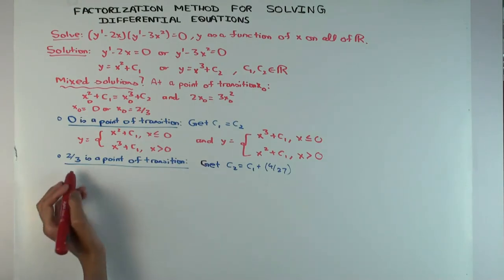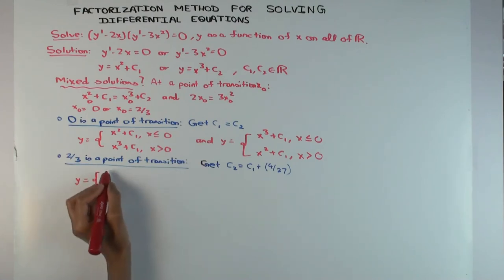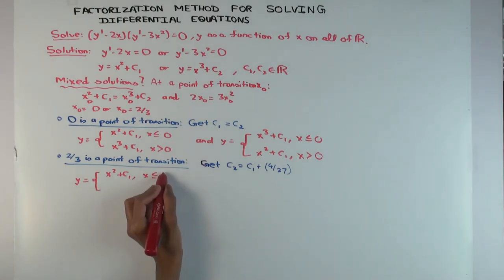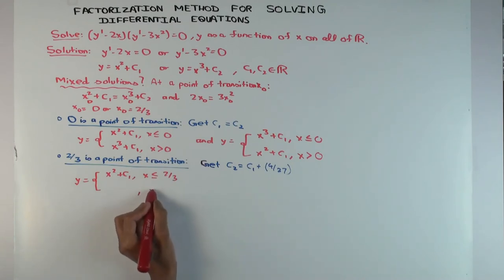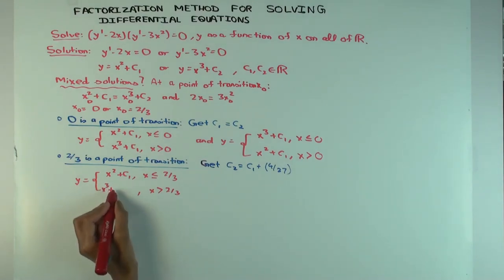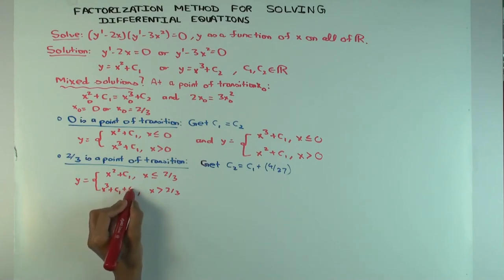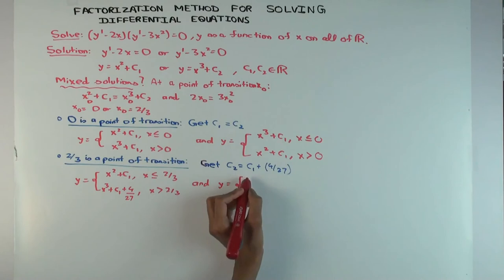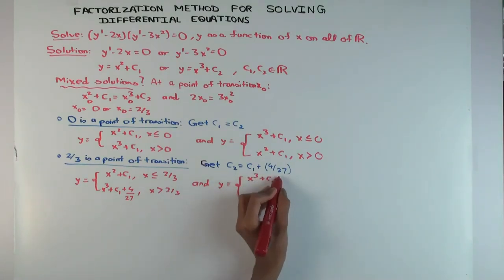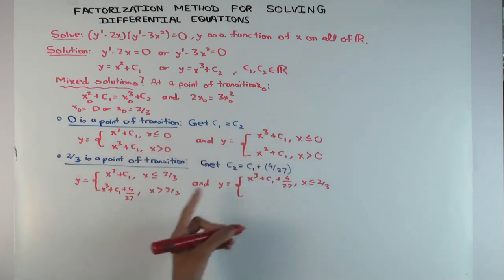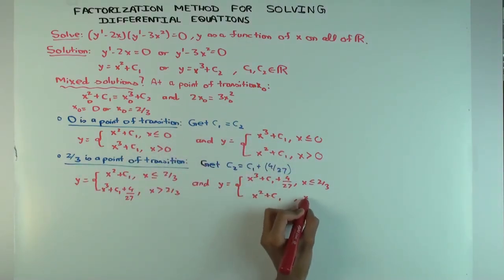So for the transition at x₀ = 2/3, one solution family is y = x² + c₁ for x ≤ 2/3 and y = x³ + c₁ + 4/27 for x > 2/3. The other family reverses this: y = x³ + c₁ + 4/27 for x ≤ 2/3 and y = x² + c₁ for x > 2/3.